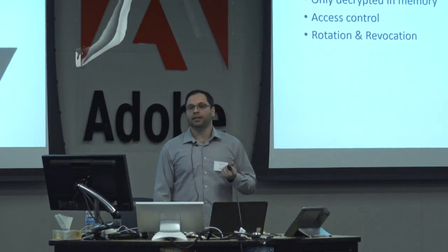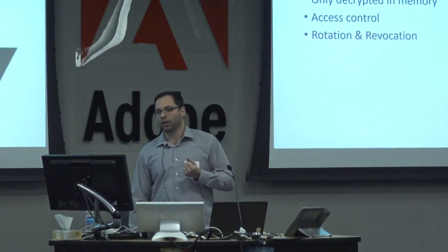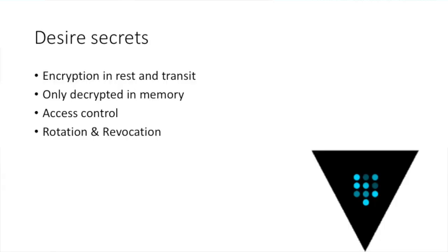So what is the desired state for secrets? You want these secrets to be encrypted at rest and in transit when you transfer the information, and only decrypted in memory when you actually need to use it. There should be some kind of access control. And you should be able to rotate or revoke them — so if I need to change a secret, I should be able to do so easily without affecting all my applications.